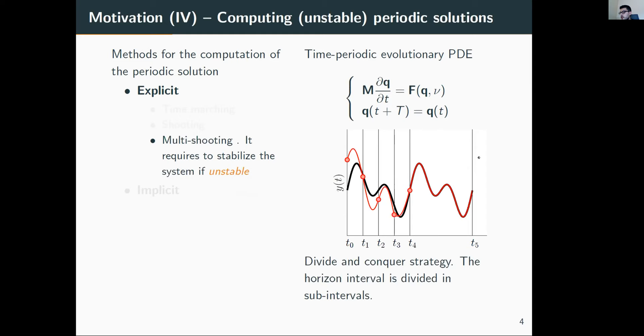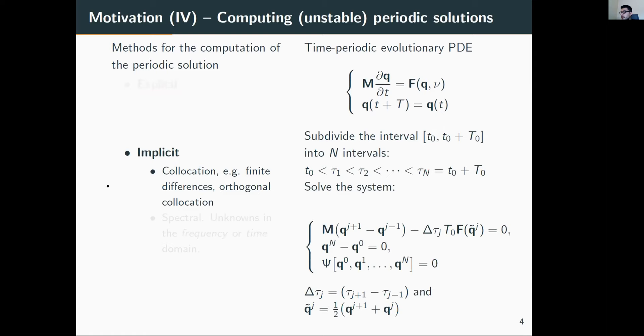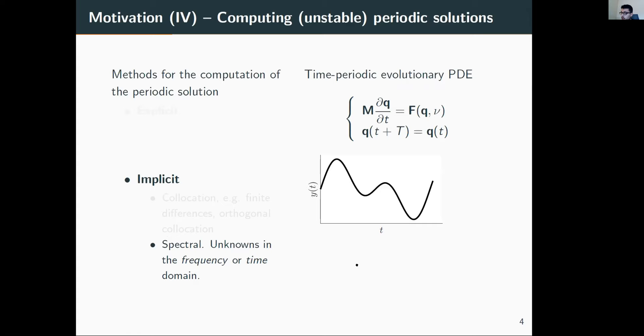Implicit methods instead try to solve the whole orbit by doing discretization in space and time—similar to what we do for space using finite differences or collocation. Then we need to solve a big non-linear system consisting of the initial system plus the periodic condition plus an extra phase-fixing condition to ensure uniqueness of the solution.